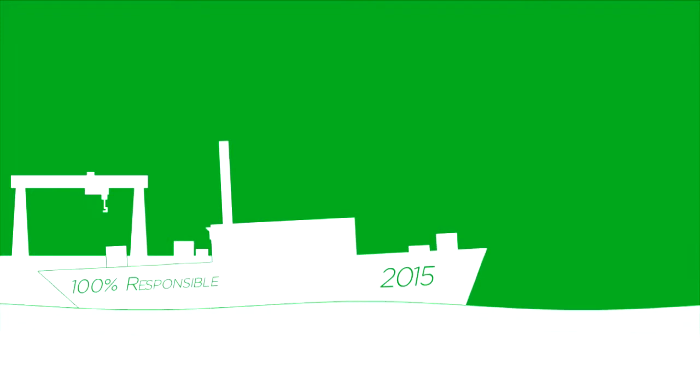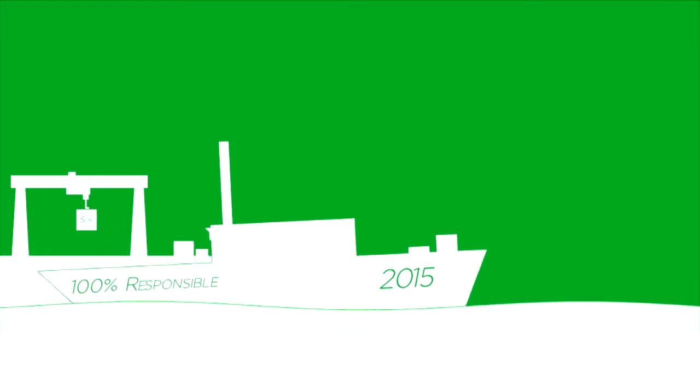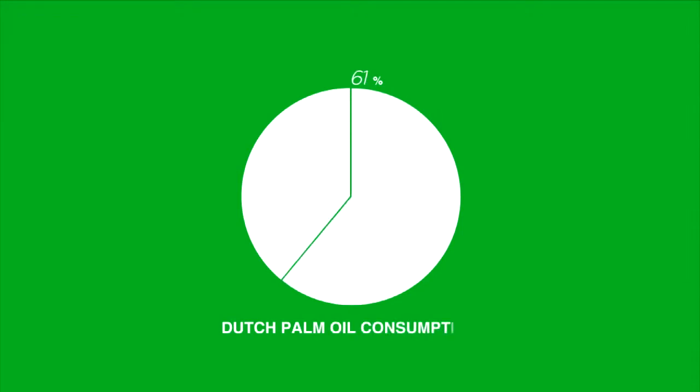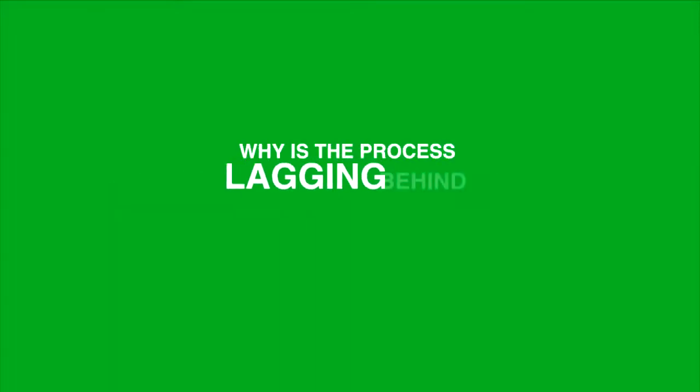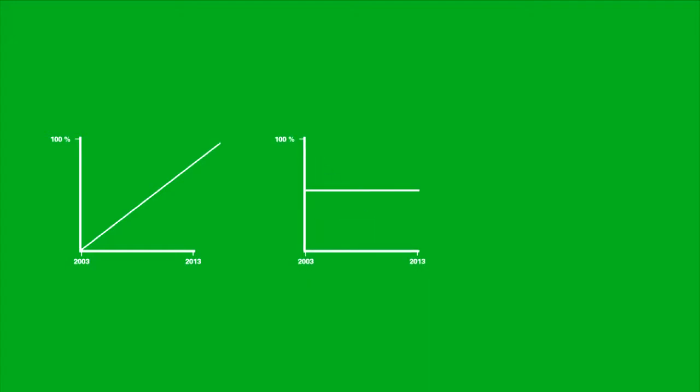The Netherlands committed to 100% certified soy and palm oil by 2015. But what are the actual numbers? In 2013, 61% of Dutch palm oil consumption was RSPO certified, and 25% of the 2.4 million tons of soy used and processed into food and feed in the Netherlands was certified. Why is the process lagging behind? Some companies have made good progress, but others choose the cheapest options or are not moving at all.